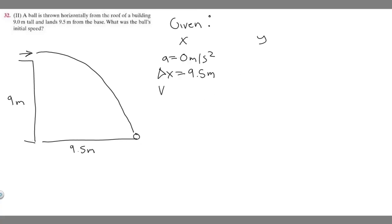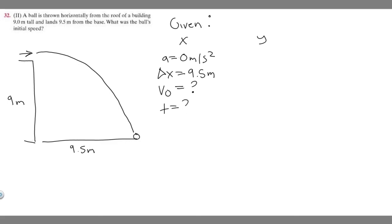We're trying to find the ball's initial speed, so v sub 0 equals question mark. We also don't know time — they don't tell us the time it takes until the ball lands — so time equals question mark as well. Now let's move on to the y direction.